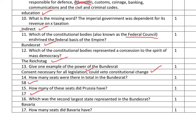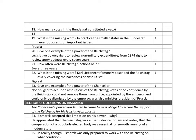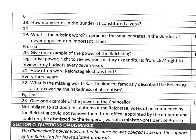Which was the second largest state in the Bundesrat? That was Bavaria. And how many seats did Bavaria have? Bavaria had six seats. How many votes in the Bundesrat constituted a veto? Fourteen votes.